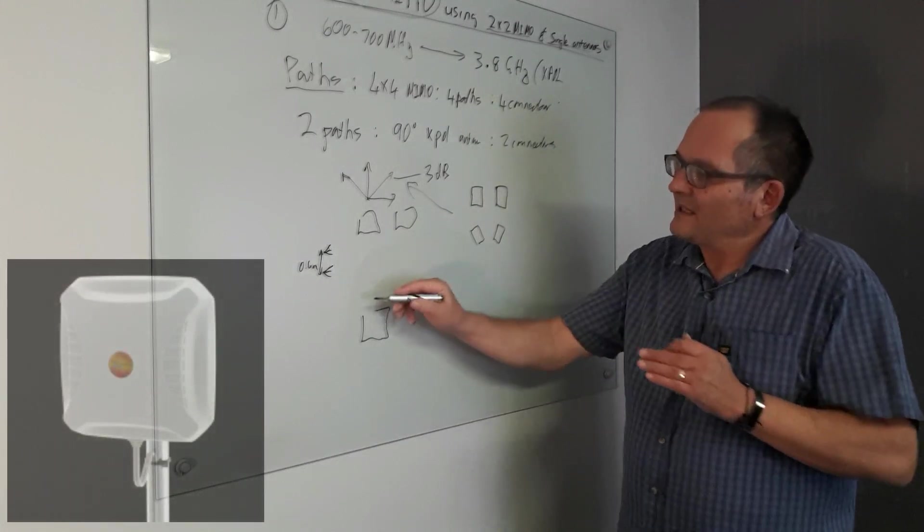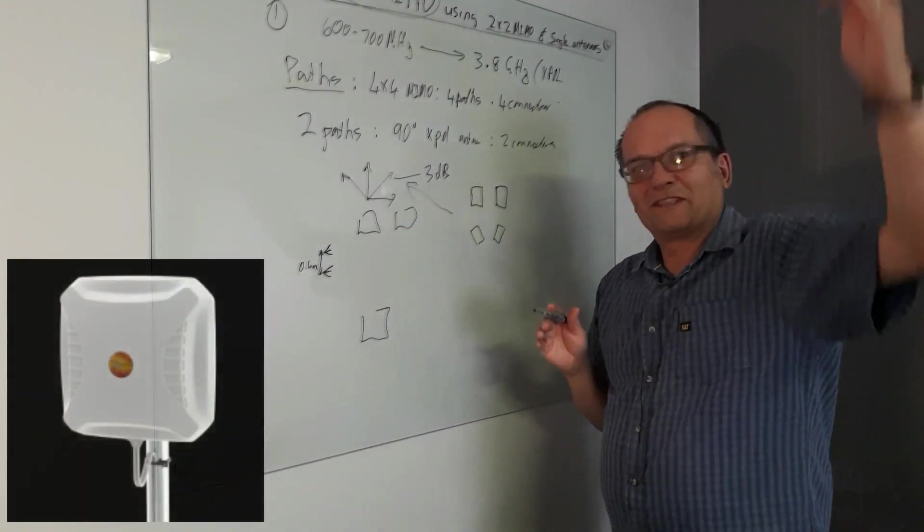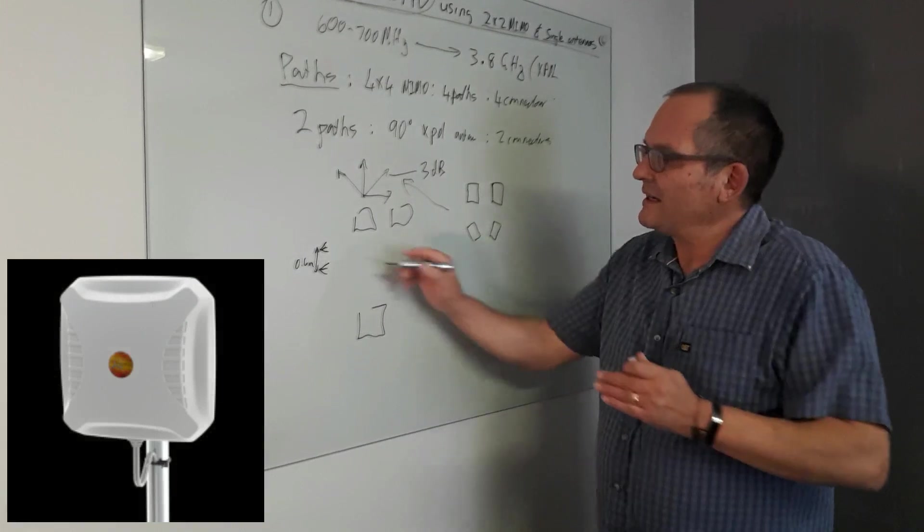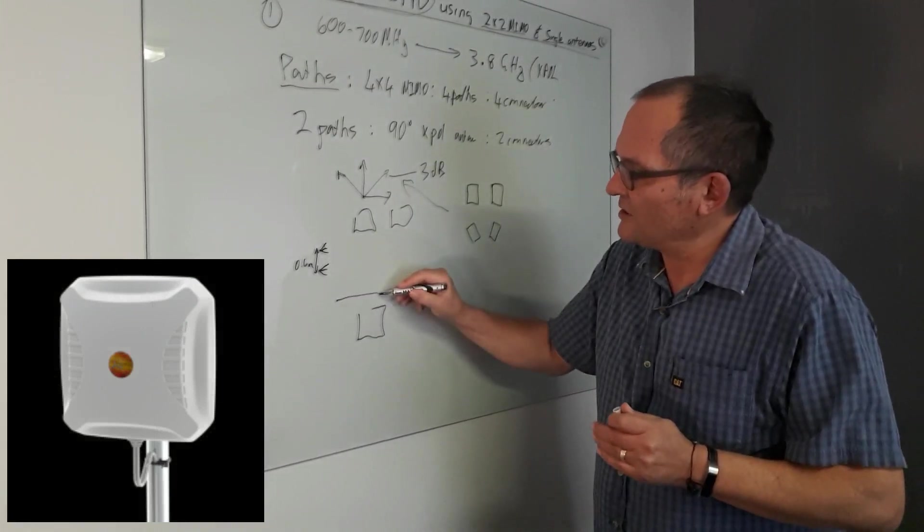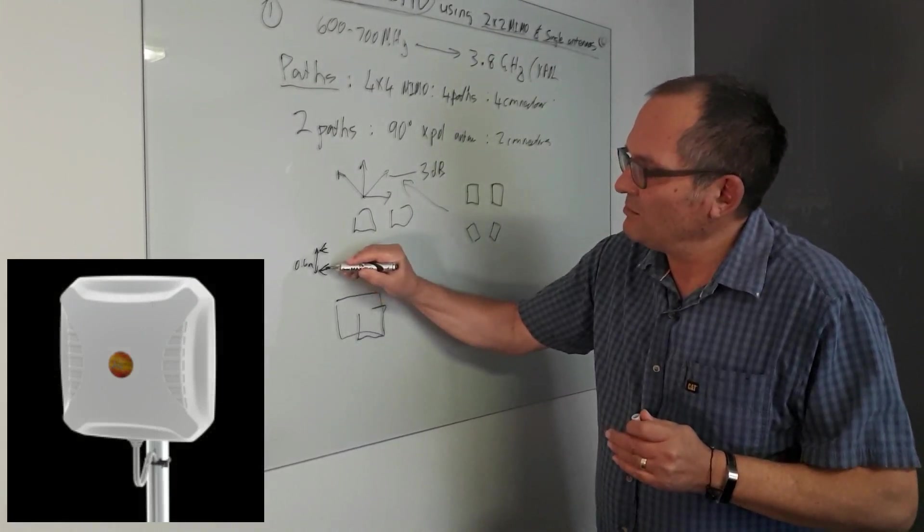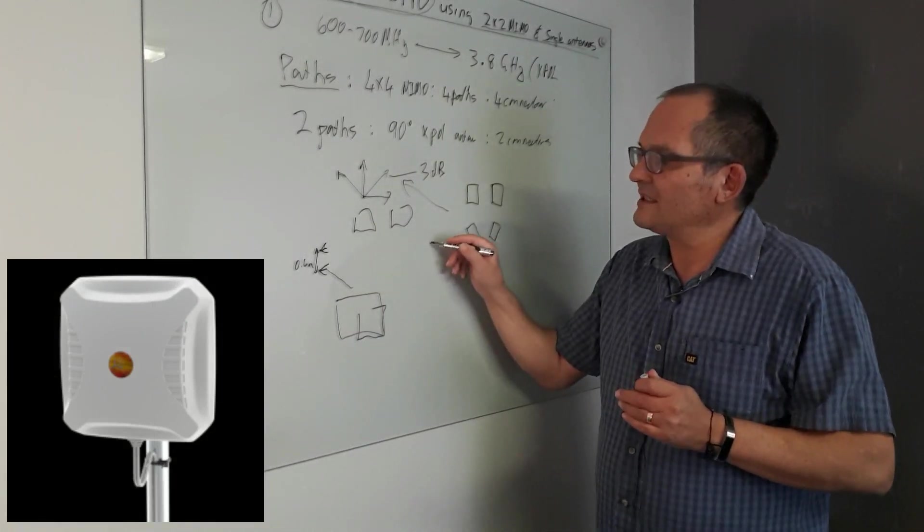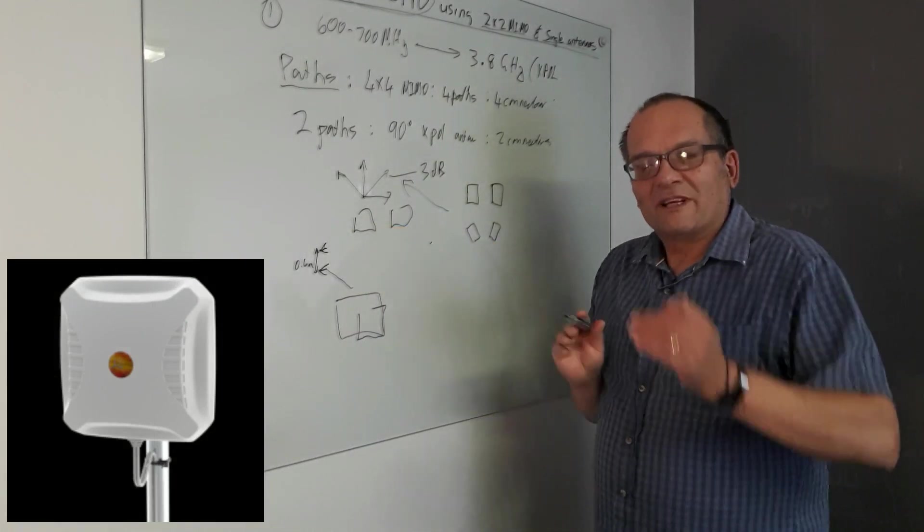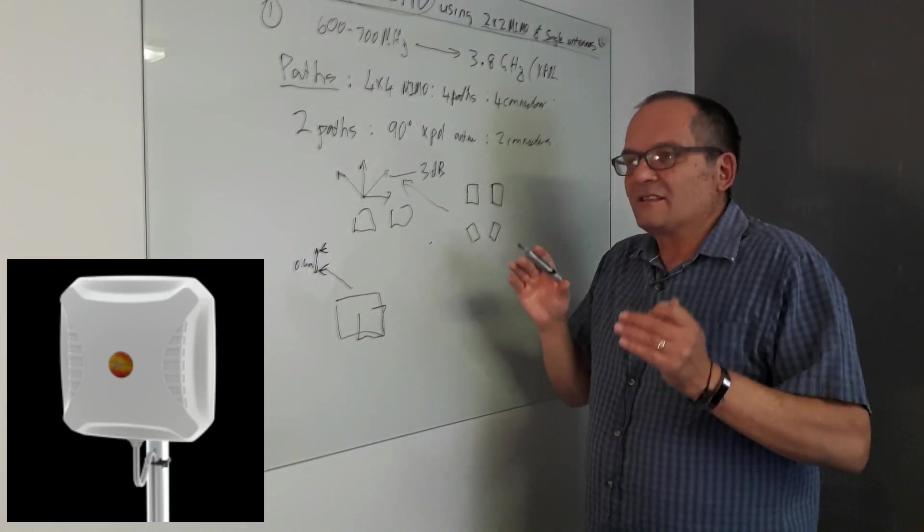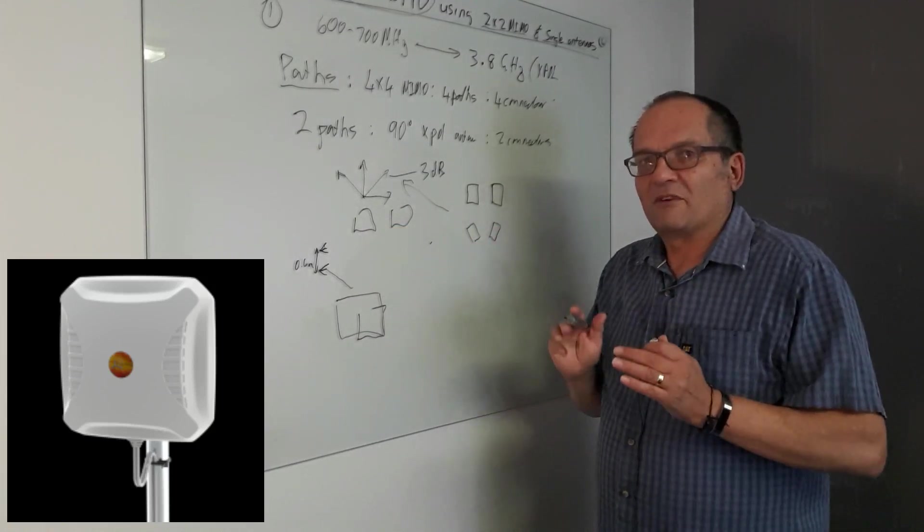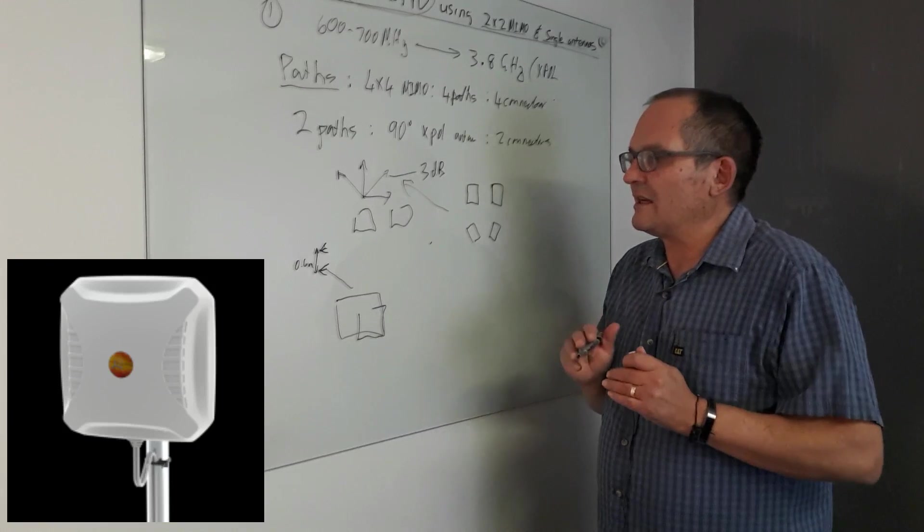And if there's really a big building close by you, big sort of surface, you could even direct them slightly. Say if this was a bigish building and you can see it, you can actually point this guy slightly this way. Don't point him towards the building. Make sure you can still see the same as what this guy can see. But that gives you an additional decorrelation for reflections coming from there. So those are little tricks and so forth.